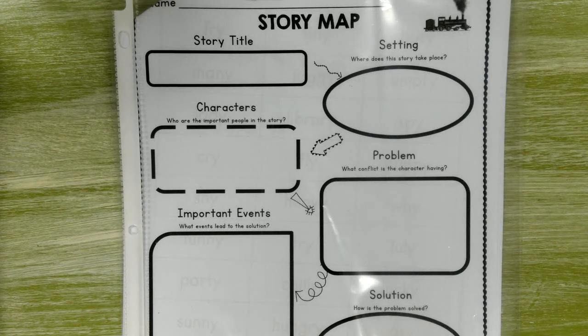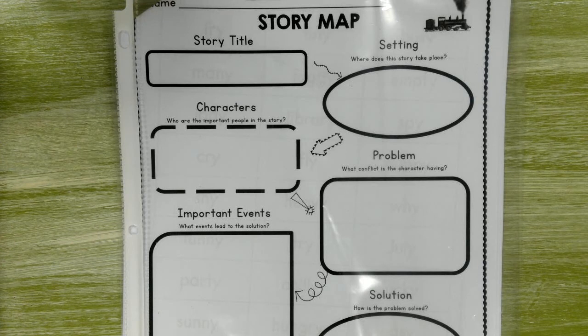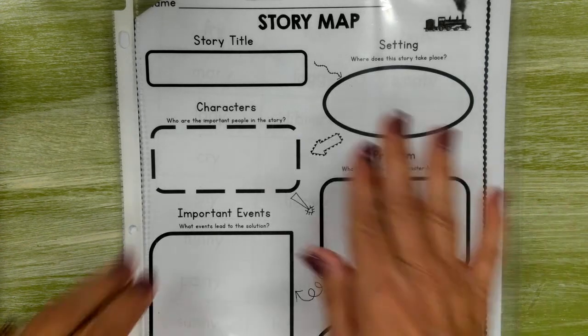This one's kind of easy too. They met at the airport and Gong Gong is from China, but that's not really the setting of this story. So be thinking about when you're reading or listening to the book, where is the majority of this story taking place?